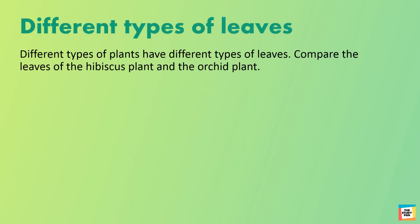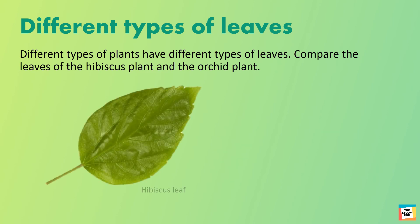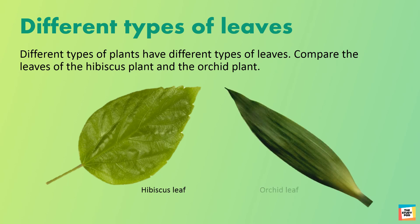Different types of plants have different types of leaves. Compare the leaves of the hibiscus plant and the orchid plant. In what ways are they similar, and in what ways are they different? Observe the different shades of color and shapes of the leaves.